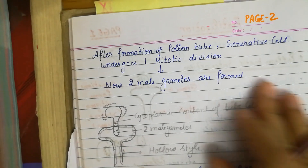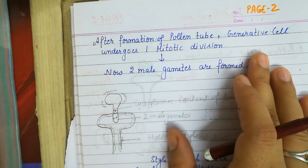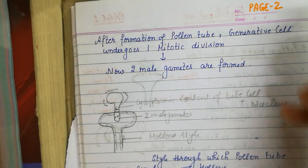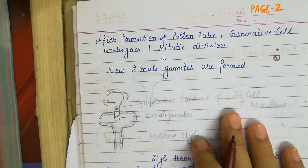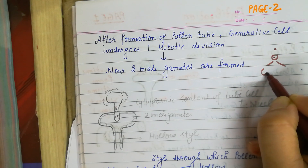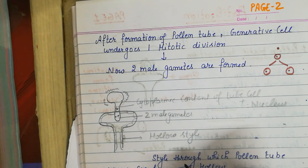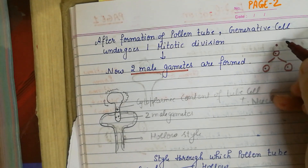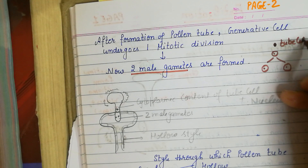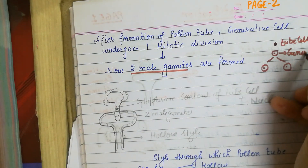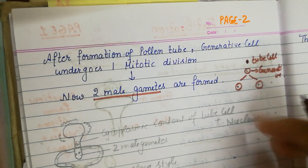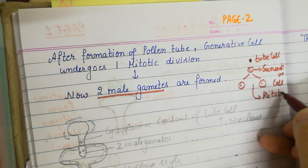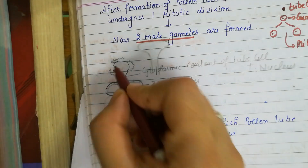After formation of the pollen tube, the generative cell undergoes mitotic division. When it undergoes mitotic division, two male gametes are formed, and the other cell remains as our tube cell. So inside the pollen tube we have one tube cell and one generative cell, and that generative cell divides mitotically to produce two male gametes.